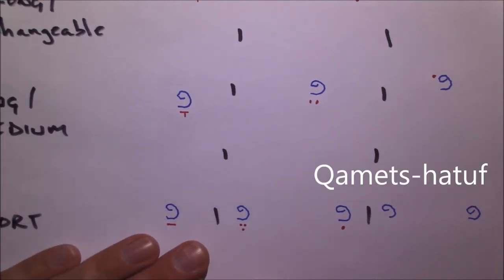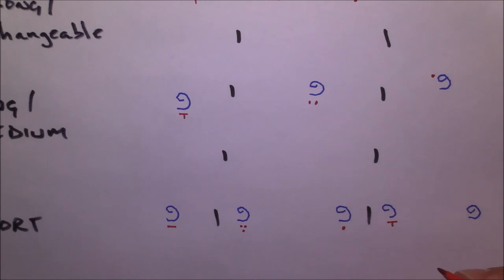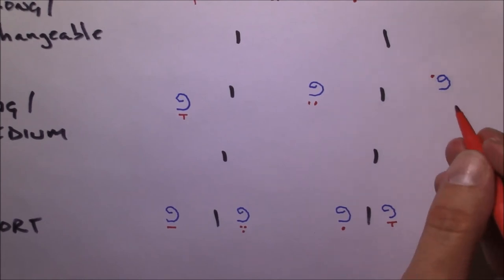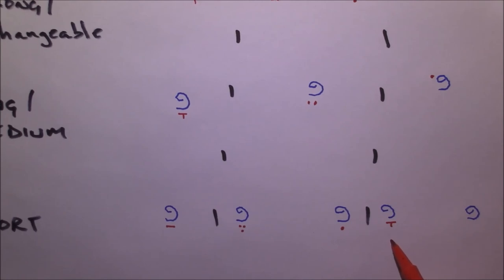And then in the U class, we have what's called the kamatz hatouf. And this is the most persnickety vowel in Hebrew, because it looks a whole lot like a kamatz because they're made the same way but it's pronounced o like a holum. Now this will have very strict rules as when it appears so it will be easily recognizable but it is often a trip up to students.